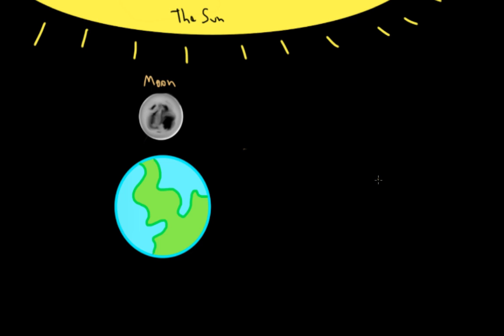And obviously this picture is not to scale. In reality, the moon and the earth are really far away from the sun. But for purposes of figuring out the lunar cycle, we're just going to use this diagram.